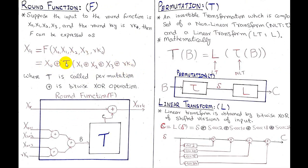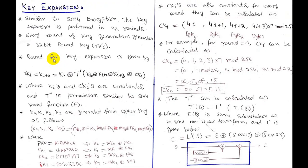In the encryption round function we used T, but in key expansion we use T'. All other steps are the same. In key expansion, we are given k0, k1, k2, k3, and ck0 as input and generate k4 as output for round 0. For round 1 (i=1) we generate k5 using k4, k3, k2, k1, and similarly generate all round keys across all 32 rounds.